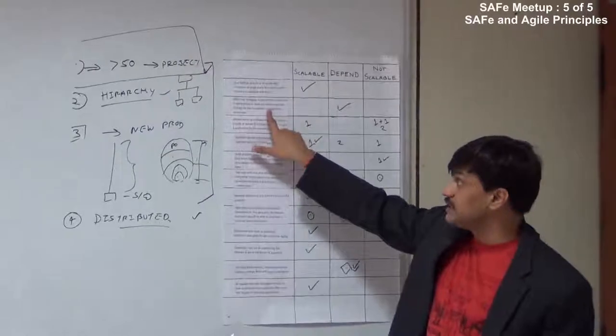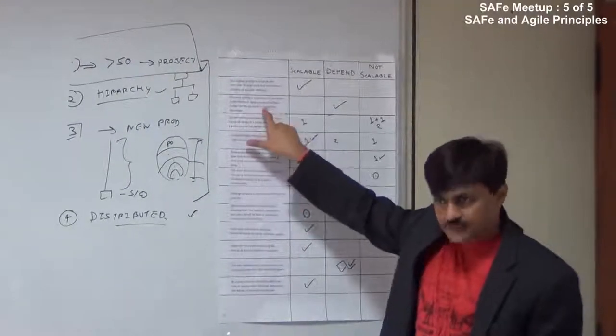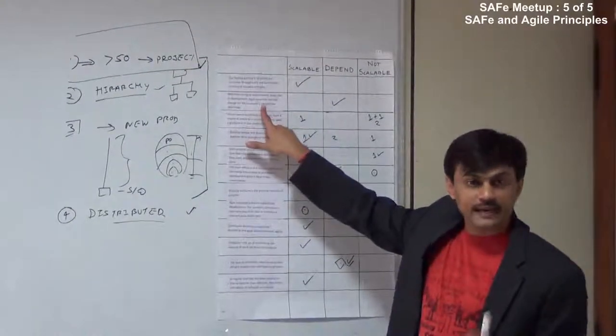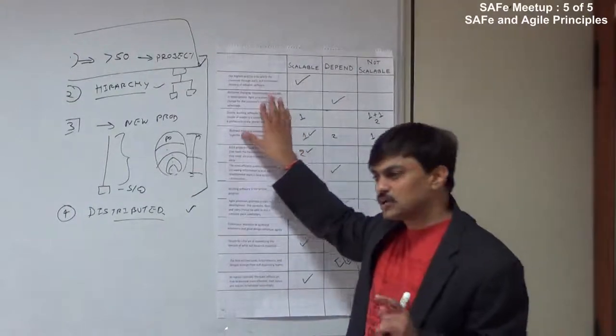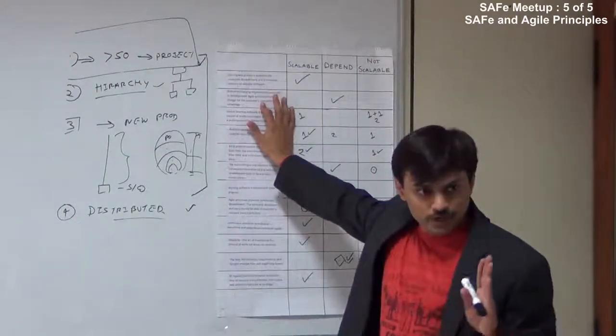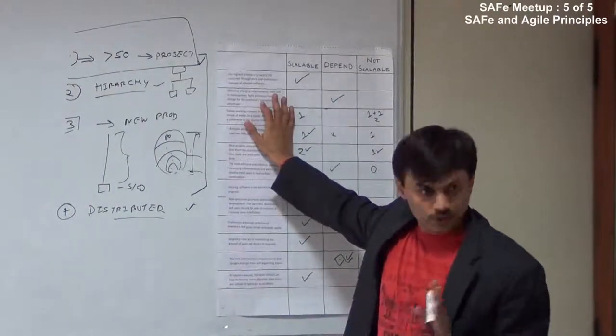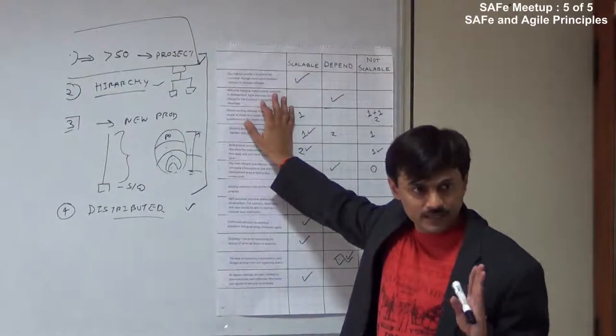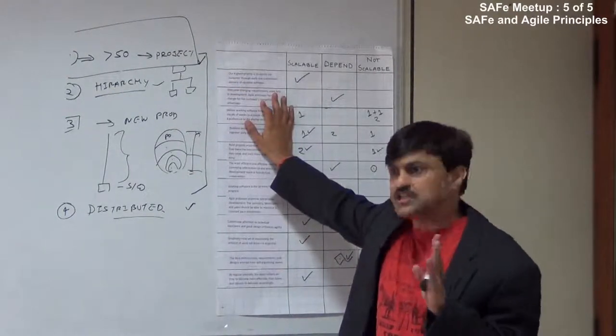Welcoming changing requirements even late in development process. So what SAFe is working with, it is working in a cadence that it is believing that don't change objectives during one PI increment. So if you have signed one PI increment, like you are working for five weeks, don't change the objective.